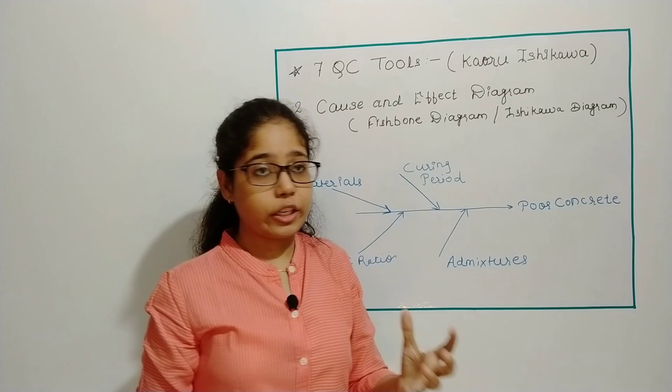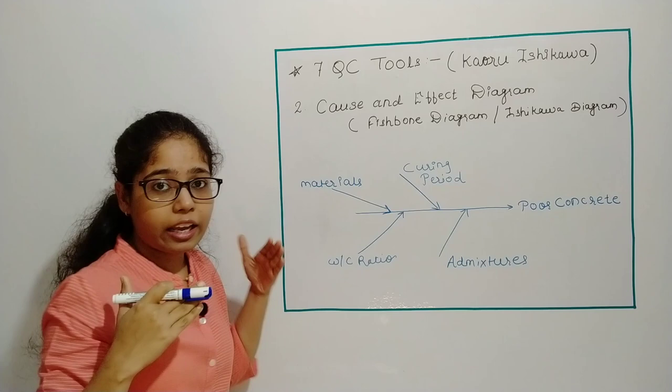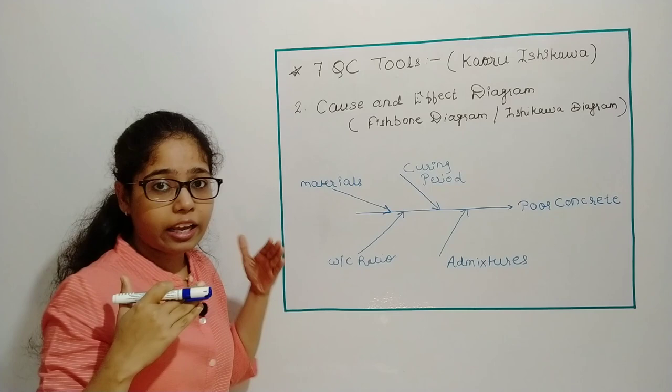So this is the fishbone diagram. Why is it called fishbone? Because here is the effect, and the causes of the effect we have denoted like fish bones. That is why it is called fishbone diagram. So this is the cause and effect diagram given by Kaoru Ishikawa to reduce the defects and improve the quality of the product. This is your second quality control tool.